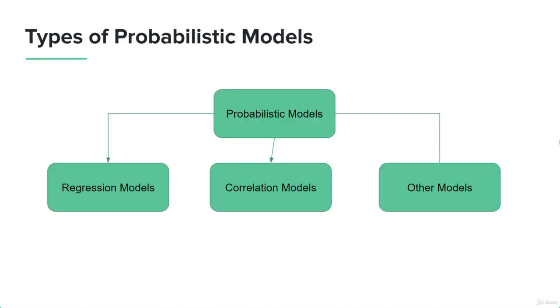There are three types of probabilistic models: regression models, correlation models, and other models. We're going to talk about regression and correlation models and look into them and understand them as well.